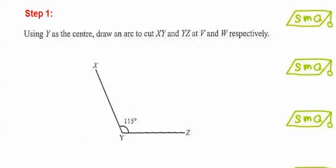Given the angle XYZ equals to 115 degrees, we have to draw an angle bisector.